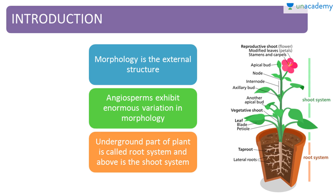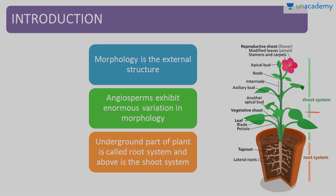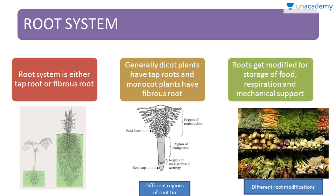Angiosperms, or the flowering plants, exhibit enormous variation in morphology, and that's what we are about to learn in this chapter. The underground part of a plant is known as the root system and the above part is called the shoot system. First of all we learn about the root system. The root system is either tap root or fibrous root. Generally dicot plants have tap roots and monocot plants have fibrous roots, and these are the different regions of root tips shown here.